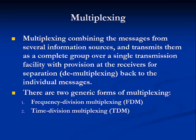Now let's go from discussing modulation to another very important signal processing technique called multiplexing. Communication systems frequently need to transmit multiple messages simultaneously from a number of different information sources in one location to a number of users at another. Multiplexing schemes meet this need by combining messages from several sources and transmitting them as a complete group over a single transmission facility, with provisions at the receiving end for separation called demultiplexing. There are two generic forms of multiplexing: frequency division multiplexing, or FDM, and time division multiplexing, or TDM.